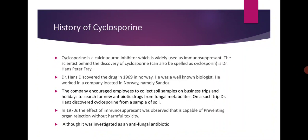Now, history of Cyclosporine. Cyclosporine is a calcineurin inhibitor which is widely used as an immunosuppressant. The scientist behind the discovery of Cyclosporine is Dr. Hans Peter Frey. Dr. Hans discovered the drug in 1969 in Norway. He was a well-known biologist who worked in a company located in Norway, namely Sandoz. The company encouraged employees to collect soil samples on business trips and holidays to search for new antibiotic drugs from fungal metabolites.